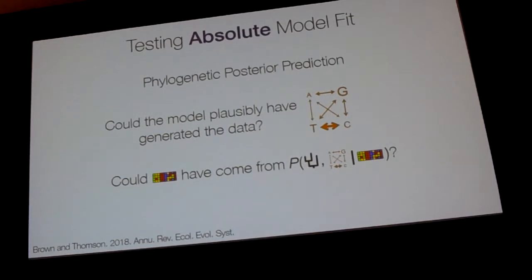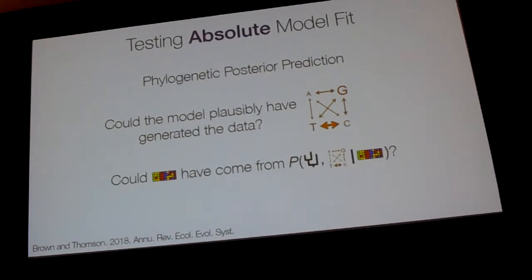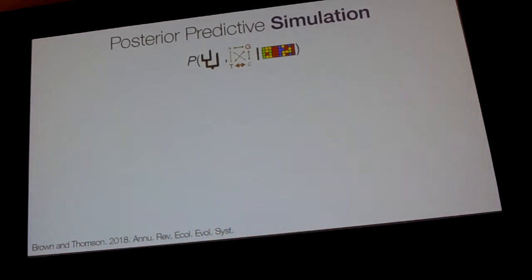First, knowing when we're doing well — the question of model fit. We're interested in the absolute fit of our models. One approach we've used a lot is posterior prediction, a Bayesian way of assessing model fit. It asks: if the model we're assuming when we do our analysis could plausibly have generated the data we collected. More formally, we ask: could the sequences in our alignment have been generated by the trees and model parameters that come out of our fitted model — from the posterior distribution inferred using that same dataset?